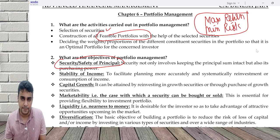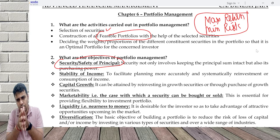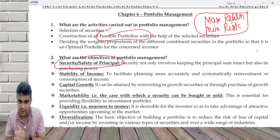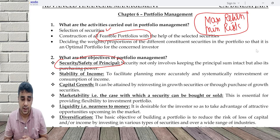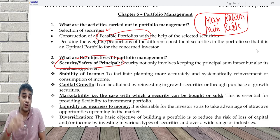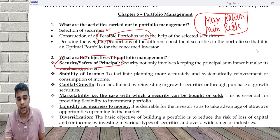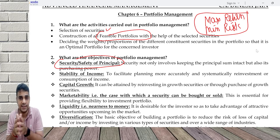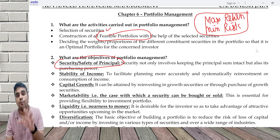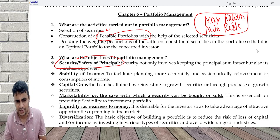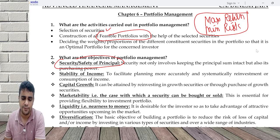Second is stability of income. Normally people work from age 25 or 30 till 50 or 55 years and create a huge corpus. This corpus is created so that I am able to meet my post-retirement expenses. So I need some stability of this income — it should come on a steady-state basis so that I can meet the objective of meeting post-retirement expenses.